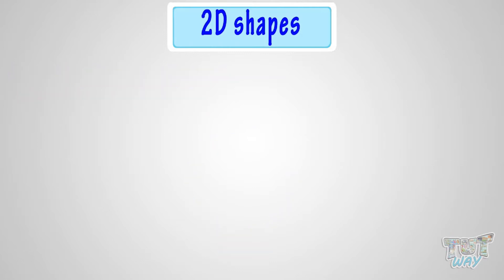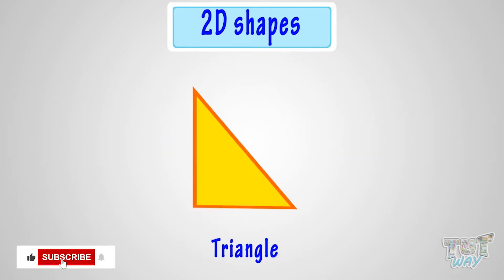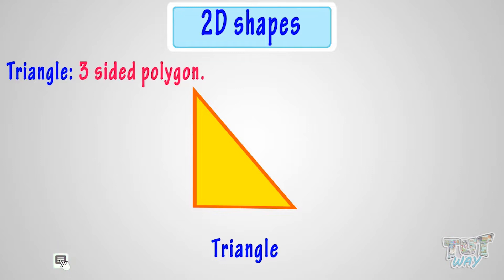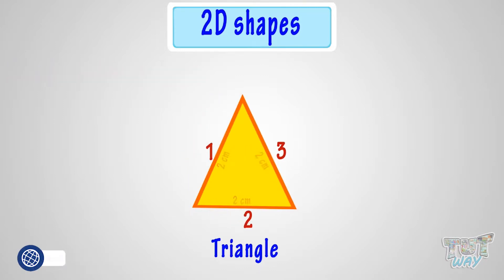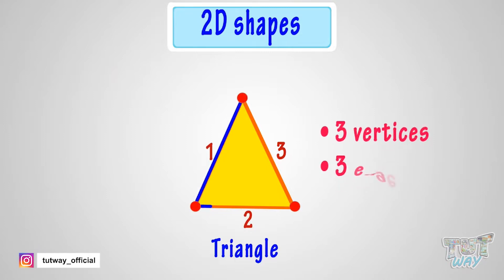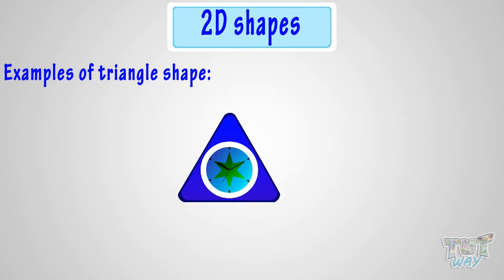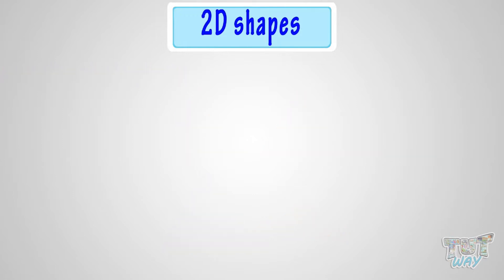Let's learn various 2D shapes. This shape is called a triangle, or a three-sided polygon. It has three sides, where all can be different or the same. It has three sides and three edges. Think of things that are triangle in shape — these are various things that are triangle in shape.